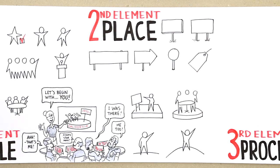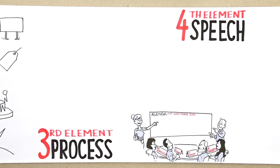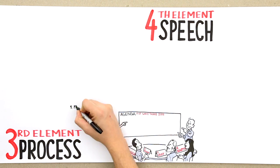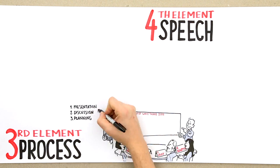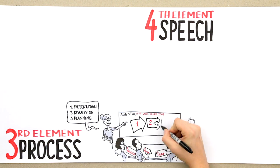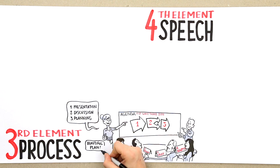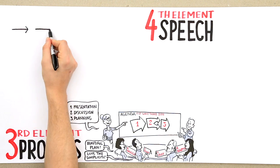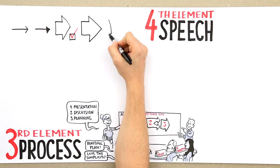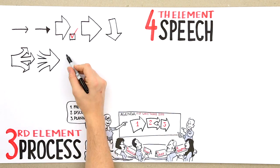Element 3: Process. You often want to show what happens or how something unfolds. To do this, simply use arrows. Simple ones can do, but different arrows create different meaning.